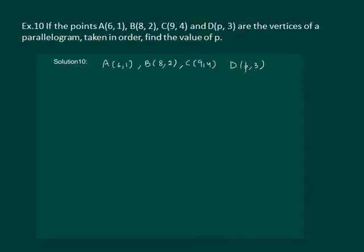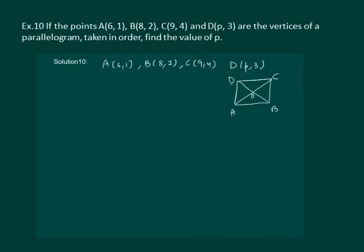Let us read the next question. If the points A, B, C, and D are the vertices of a parallelogram taken in order, find the value of P. We know that the diagonals of a parallelogram bisect each other, so the coordinates of point O in the figure are the midpoints of both AC and BD. In other words, the coordinates of the midpoint of AC and the midpoint of BD should be equal.